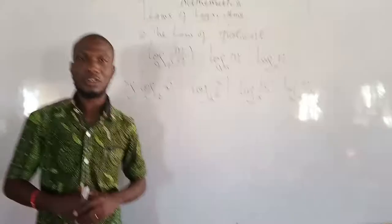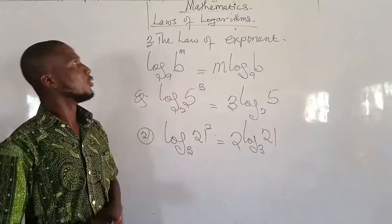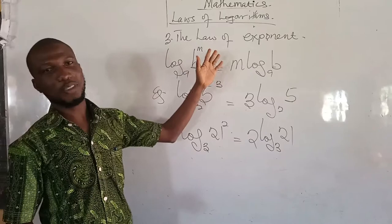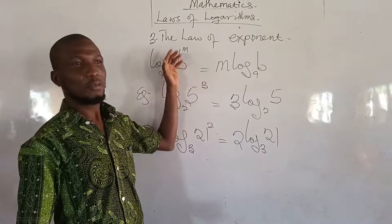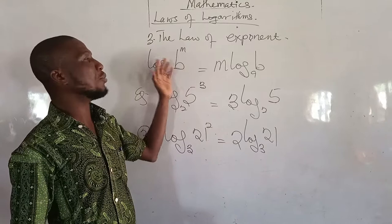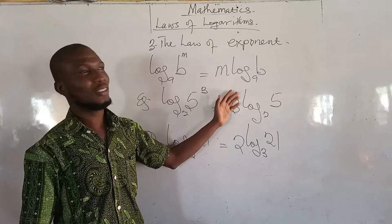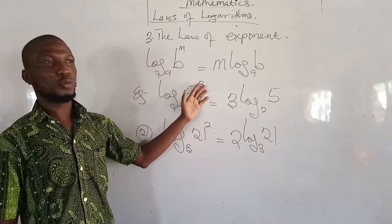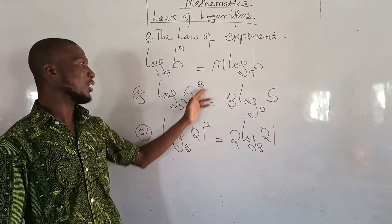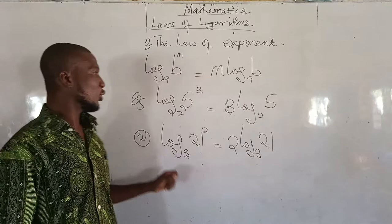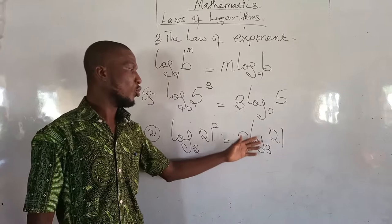Now the third law: the log of exponents. This says that when you take the logarithm of a number with an exponent, the answer is the same as the exponent times the logarithm of that number to the same base. For example, log(5 cubed) base 2 is the same as 3 log 5 base 2. Another example: log(21 squared) base 3 is 2 log 21 base 3.